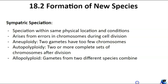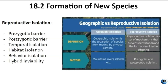Even without physical barriers, speciation can occur within the same habitat, a process called sympatric speciation. This divergence can be initiated by chromosomal errors during cell division, leading to polyploidy where cells have extra sets of chromosomes. Over time, genetic and phenotypic differences between populations can lead to reproductive isolation, where mating becomes less likely. If it does happen, the offspring may be non-viable or infertile. There are prezygotic and postzygotic barriers to reproductive isolation. Prezygotic barriers prevent reproduction from occurring at all, such as differences in breeding schedules, like temporal isolation. Postzygotic barriers can prevent successful reproduction even if fertilization occurs — hybrid offspring may not develop properly, or they're sterile.